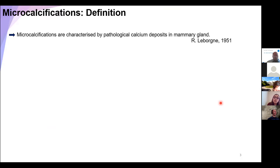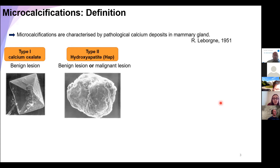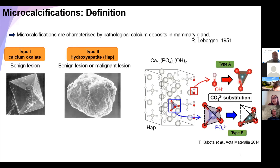In this context, the microcalcifications appear to be a unique early marker for breast cancer detection. A microcalcification is defined by a pathological calcium deposit in the mammary tissue. There are different kinds: calcification type 1, composed of calcium oxalate, found only in benign lesions; and calcification type 2, composed of hydroxyapatite, found in both benign and malignant lesions. This type of crystal is really interesting, which is why I focused my entire study on it. In biological tissue, we don't have a pure hydroxyapatite form — due to differences in pH, temperature, etc., we find different ion substitutions. The most common is carbonate ion substitution: type A, where carbonate replaces a hydroxyl group, and type B, where carbonate replaces a phosphate group.